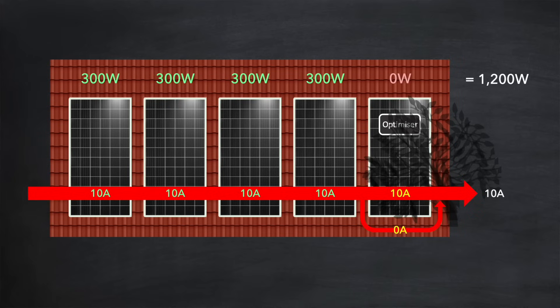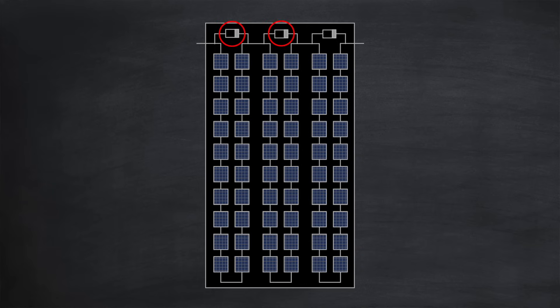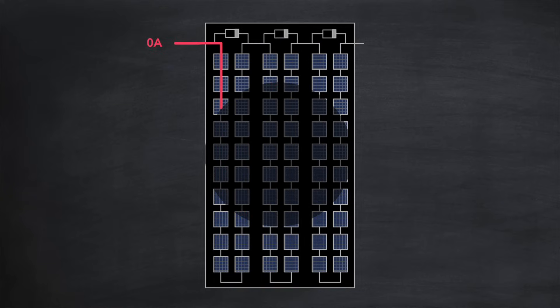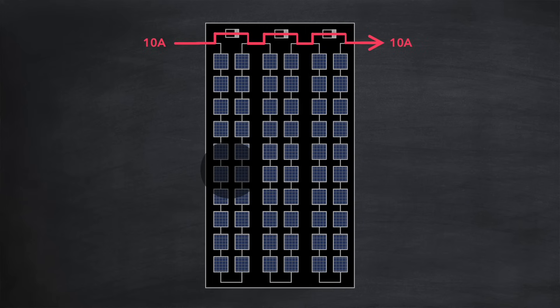Let's remove the optimizer to see if we can figure that out. Nothing changes — how can this be? Well, remember those little components called bypass diodes. Despite their small size, they actually perform a similar function to an optimizer. If these diodes detect a blockage in current within the cells they're managing — typically anything above a 20% reduction in current — they will bypass all of the current around those cells. And because there are three bypass diodes, each diode acts independently on a third of the panel. So if only a third of the panel is affected by shading, the remaining two-thirds can still generate power. Crude, but highly effective.